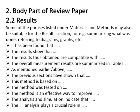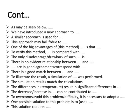Section 2.2 covers the results part of the review paper. Some phrases listed under materials and methods may also be suitable for the results section — for example, summarizing what was done, or referring to diagrams and graphs. Fifteen phrases for the results part are given, and seventeen phrases for the discussion part are also provided. You can fill in the blank spaces to fit your content requirement.